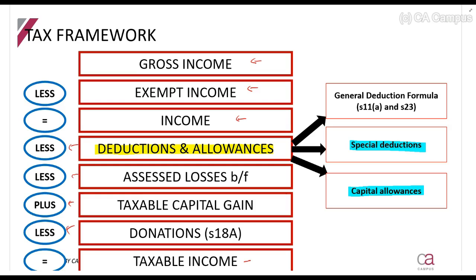These are specific types of expenses which the government has identified and wants to tax in a certain way. But it is impossible to write a section for every single possible expense people can incur, because every single business has different expenses. So they had to write a general section which you can apply in all instances — when there's no special deduction or capital allowance — and that is called the general deduction formula, discussed in section 11a and section 23.